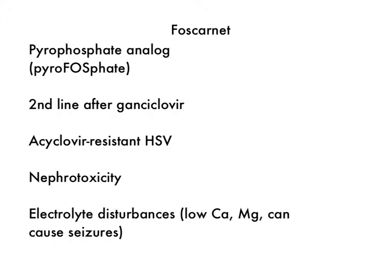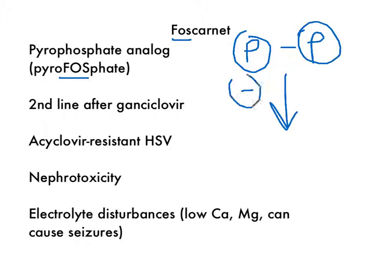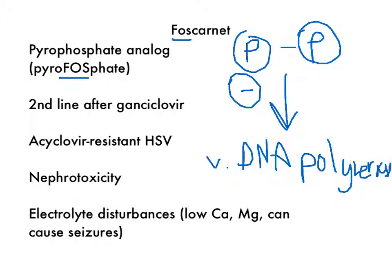The next drug is foscarnet. Foscarnet is a pyrophosphate analog — just think of the 'FOS' in the name, and re-spell pyrophosphate with FOS. Pyrophosphate is simply two phosphates linked together. Foscarnet directly inhibits the viral DNA polymerase by binding to the pyrophosphate binding site on the enzyme, since the DNA polymerase is looking for deoxynucleoside triphosphates and has a pyrophosphate binding site. Importantly, foscarnet does not require activation by the viral kinase.